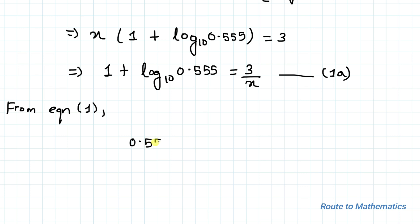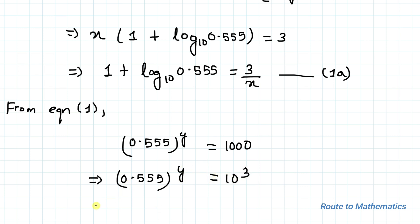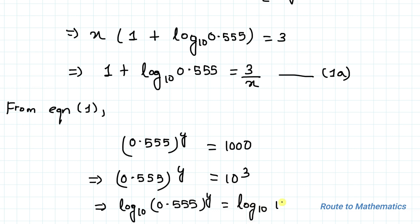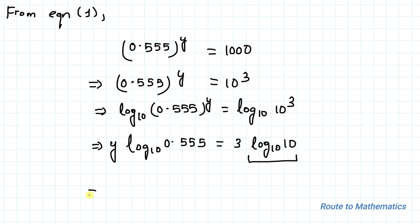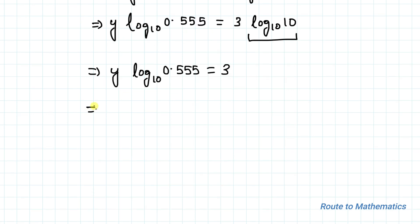Again from equation 1, we have 0.555 to the power y equals 1000, which is 10 cubed. Applying log base 10 on both sides and using the logarithm power rule, we get y times log base 10 of 0.555 equals 3 times log base 10 of 10, which simplifies to log base 10 of 0.555 equals 3/y. Let's call this equation 1b.